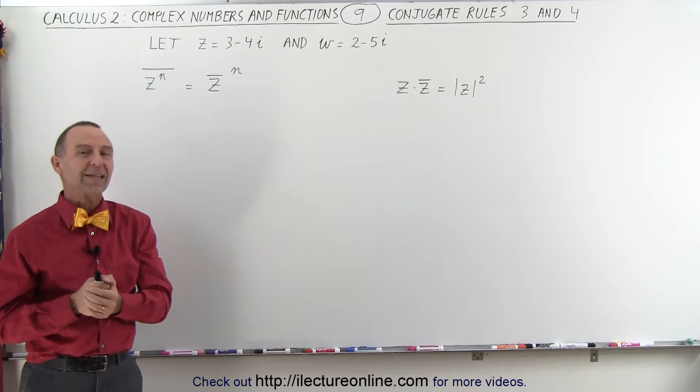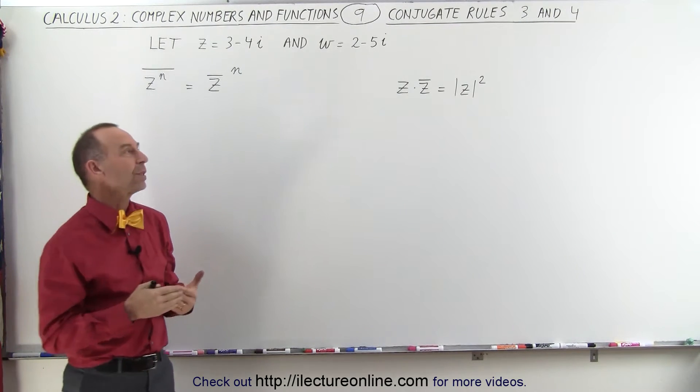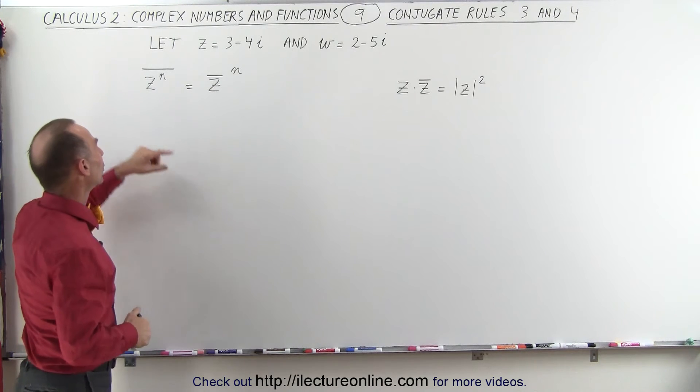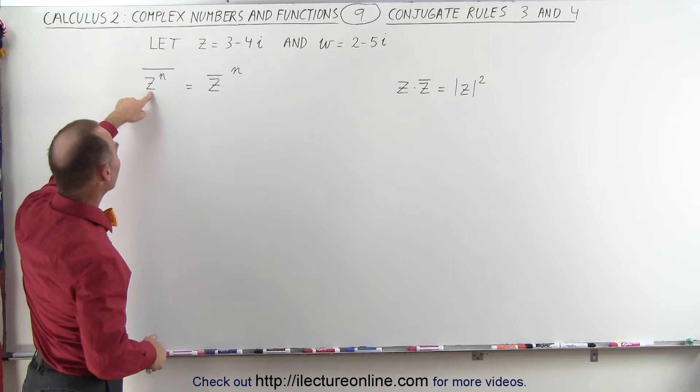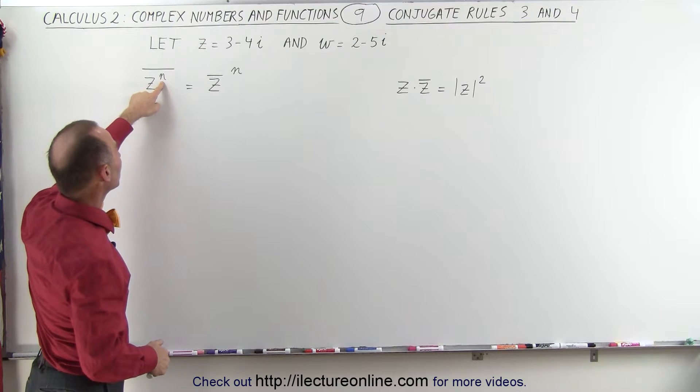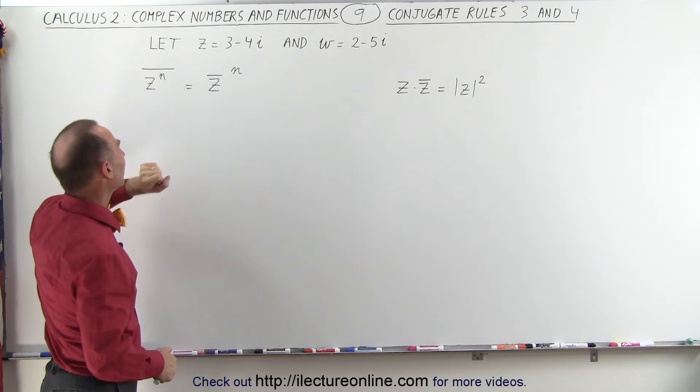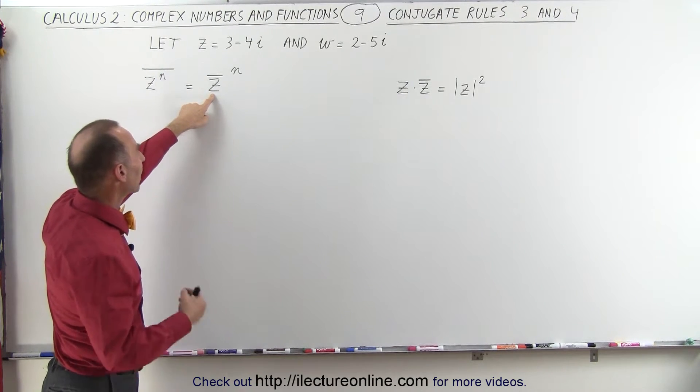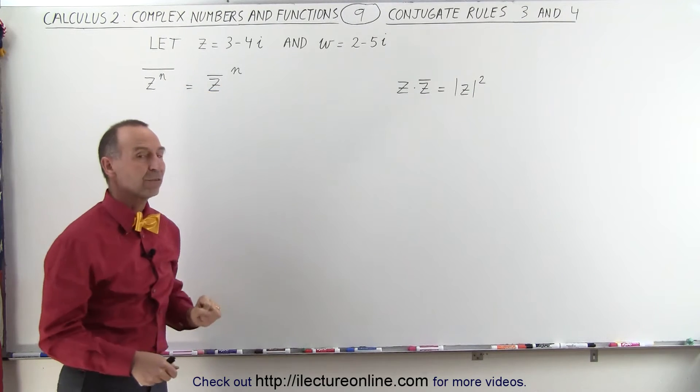Welcome to our lecture online. Now let's take a look at a few more rules with conjugates. The third rule tells us that when we take a complex number and raise it to an exponent and then take the conjugate of that, that should equal the conjugate of that complex number raised to the same exponent.